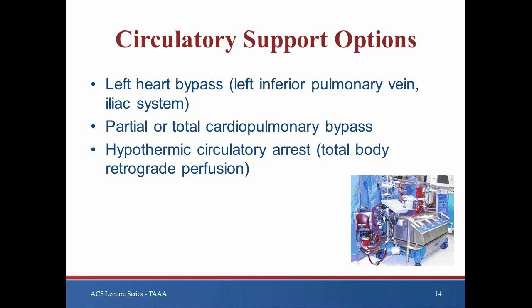At our institution, we more commonly employ partial cardiopulmonary bypass, electing to cannulate the left femoral vein with an extended venous cannula that is advanced to the level of the right atrium, and arterial inflow as described previously. This strategy avoids issues with right heart strain and is especially advantageous in patients with inadequate pulmonary reserve who may not tolerate single lung ventilation. We believe the advantages of this approach outweigh the additional inflammatory insult resulting from membrane oxygenation. In cases where a proximal clamp site is not feasible and thus circulatory arrest is mandatory for construction of the proximal anastomosis, we utilize the same cannulation strategy but proceed to hypothermic circulatory arrest with subsequent total body retrograde perfusion. This enables a uniform strategy for all TAAA repairs, streamlining the process for the surgeon and the entire operating room staff.